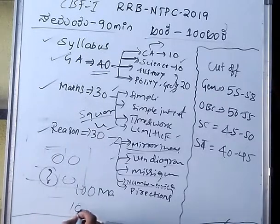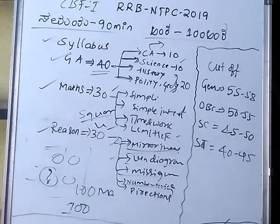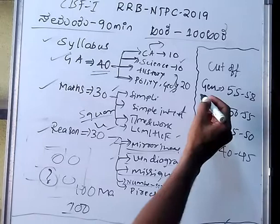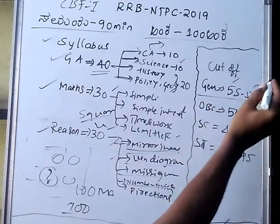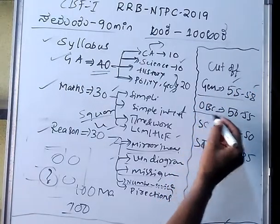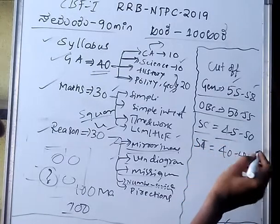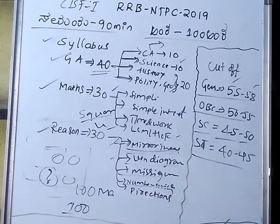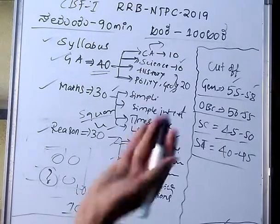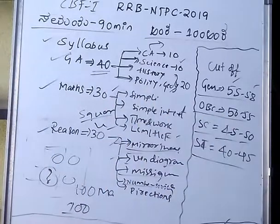Direction problems are also included. Looking at past question papers, the first level CBT-1 is a qualifying round. The cut-offs are: General category 55 to 58 marks, OBC around 50, SC 45 to 50, and ST 40 to 45 marks.